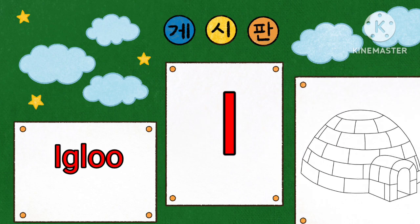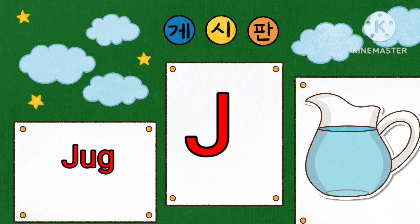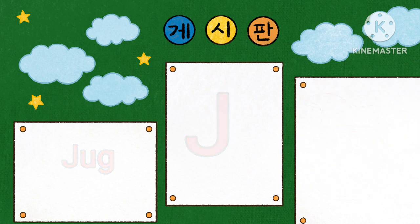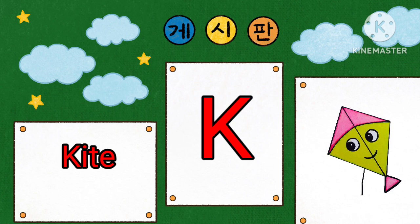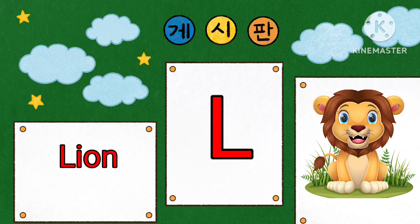I is for Igloo. J is for Jug. K is for Kite. L is for Lion.